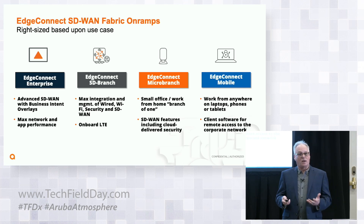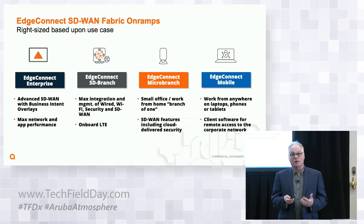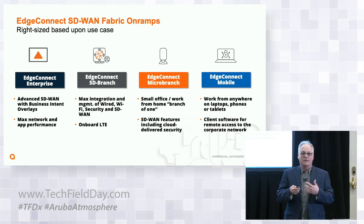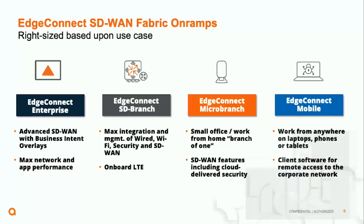Micro Branch is for the branch of one — for a kiosk, for a pop-up, you can have one in your house. It allows you to extend SD-WAN capabilities into that branch of one. Edge Connect Mobile is the VIA client for a mobile worker or a remote worker.